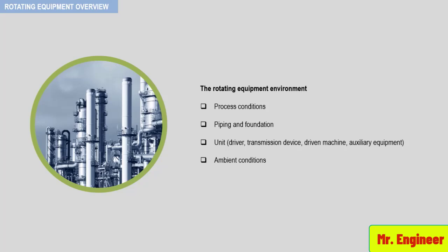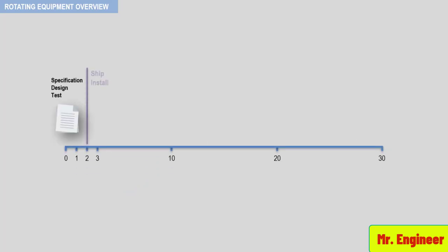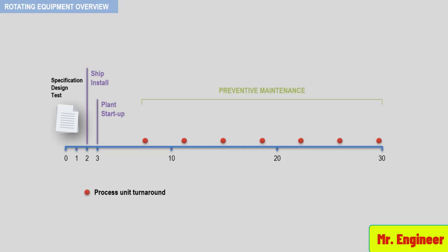Take a look at the following figure — it represents a typical lifespan of rotating equipment. A typical installation will have a specification, design, and installation phase of only 10% of the total life of the process unit. Improper specification, design, or installation will significantly impact the maintenance requirement, the maintenance cost, and the availability of a particular piece of machinery.